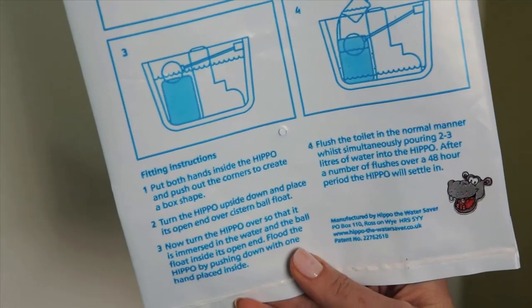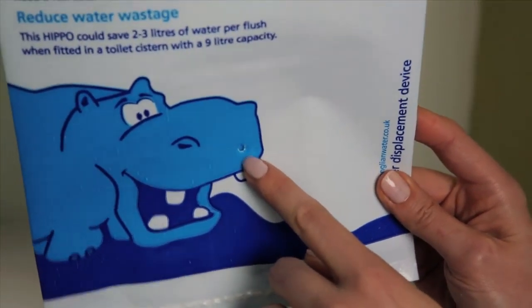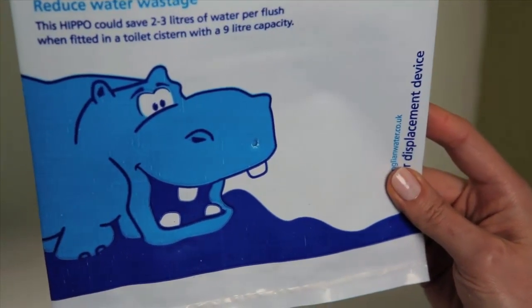Each Hippo has a small hole punched in both sides to allow a free flow of water as the cistern empties and refills. This makes sure the water stays fresh inside the Hippo and doesn't become stale.